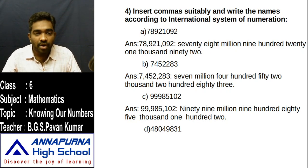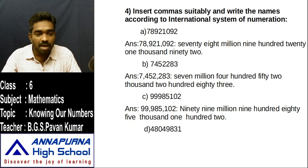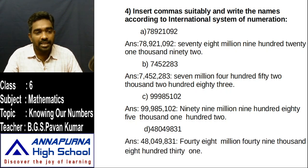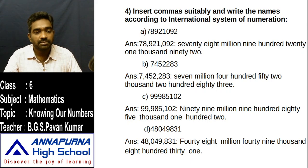Next one: 48049831. Insert commas — first comma after ones period, next after thousands period. Answer: 48,049,831 — forty-eight million forty-nine thousand eight hundred thirty-one. This completes Exercise 1.1. We will go to the next topic in the next video. Thank you for watching.